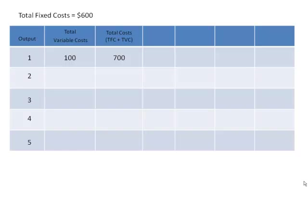Now look what happens as we increase output. When we go to two units of output, our total variable costs have gone up $50, so now they're $150. Our total costs then are variable of 150 plus fixed of 600, so we have a total cost of $750.